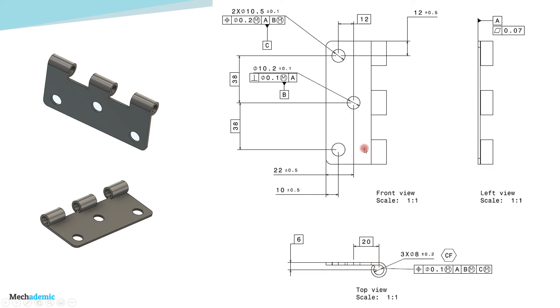This completes the tolerancing scheme for the hinge bracket, with the datum scheme set and the pinhole controlled with respect to it. Next, we'll understand the functional gauging of this kind of bracket, which will clarify how the part will be verified and inspected.